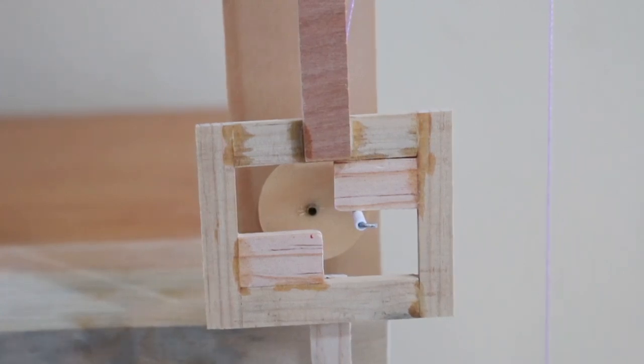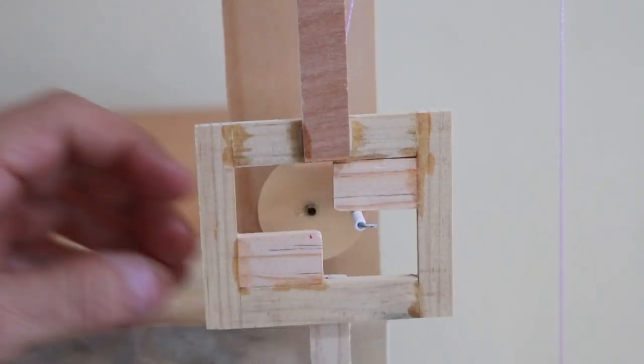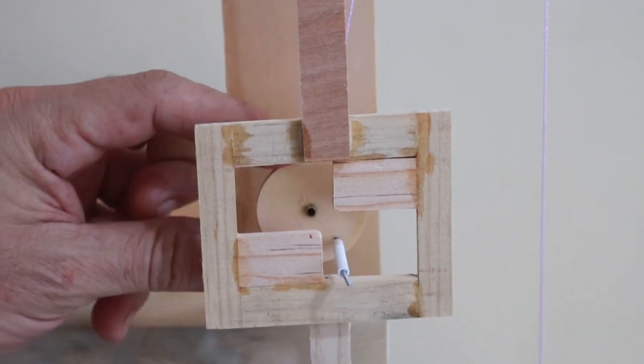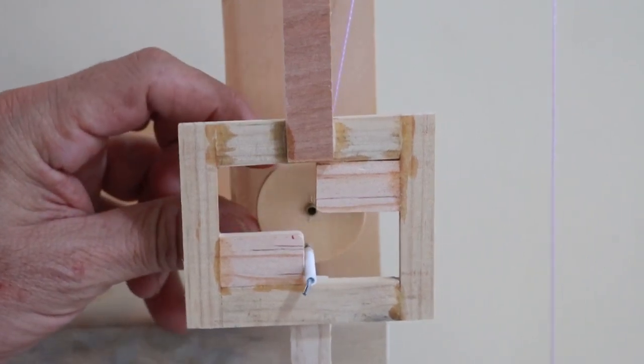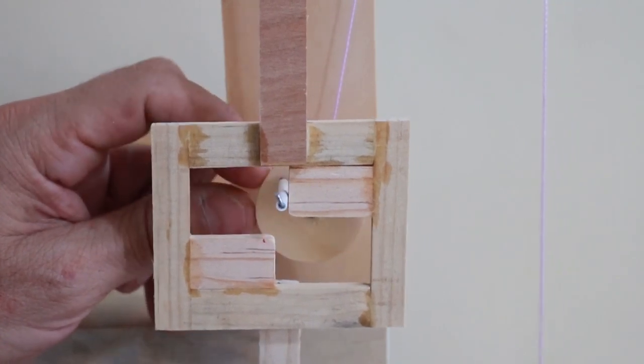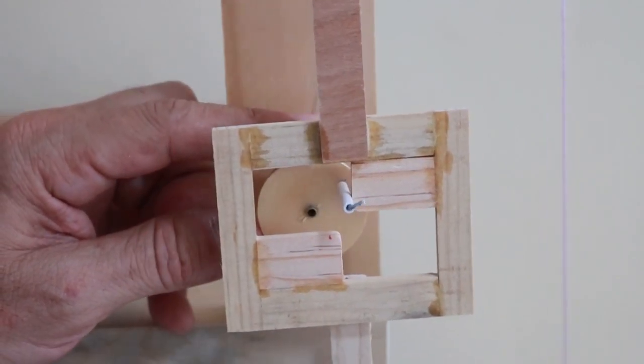The wheel rotates clockwise, so that in this part of the movement it pushes the pendulum to the left, and then it pushes the pendulum to the right.